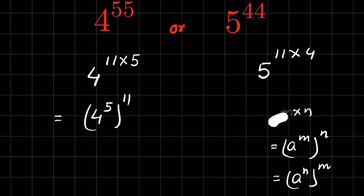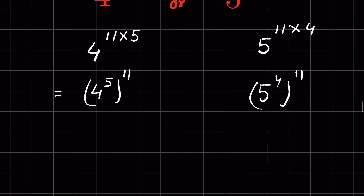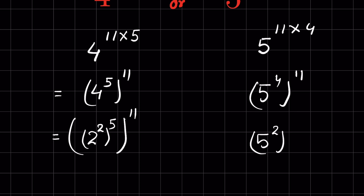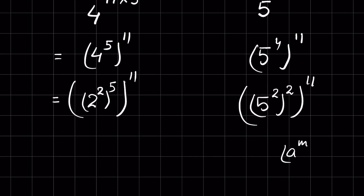So this becomes 4 raised to the power 5, whole raised to the power 11, and this side becomes 5 raised to the power 4, whole raised to the power 11. Now, 4 raised to the power 5 can be written as 2 raised to the power 2, whole raised to the power 5, then all raised to the power 11. And on the other side, 5 raised to the power 4 is 5 raised to the power 2, whole raised to the power 2, then all raised to the power 11.